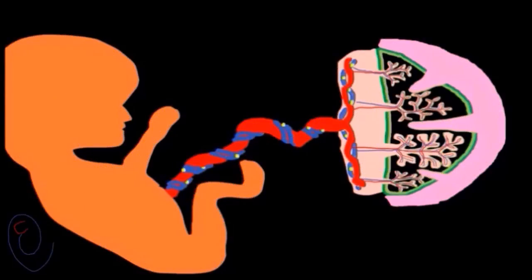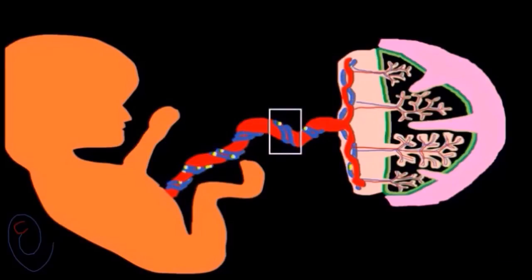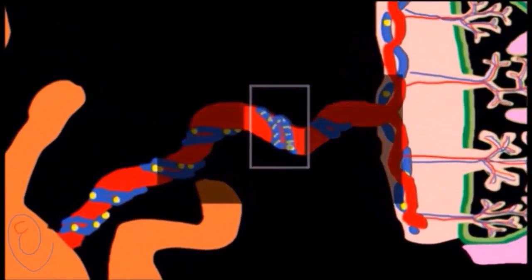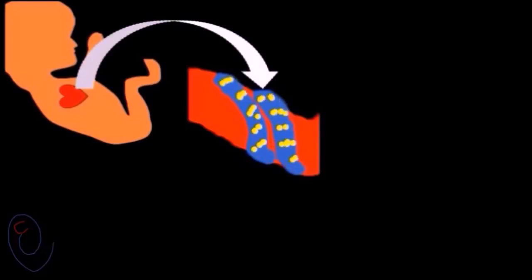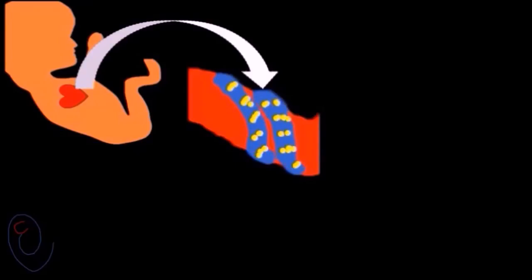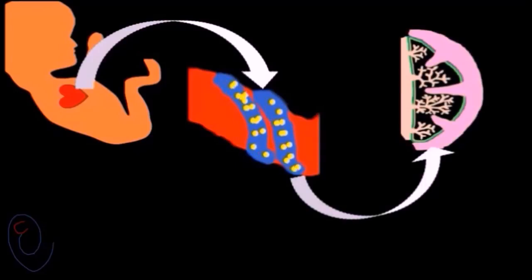Umbilical artery Doppler measures the velocity of blood flow inside the umbilical artery. During systole, the blood flow is very fast, depending on fetal heart contraction. During diastole, the blood continues to move forward towards the placenta, but this depends on the placental vascular resistance.